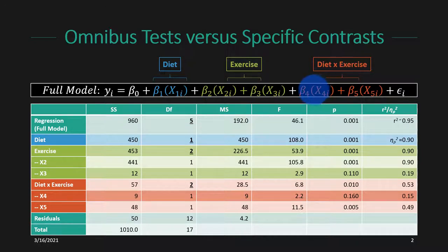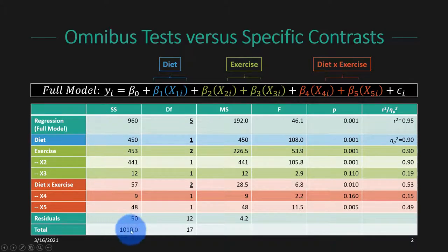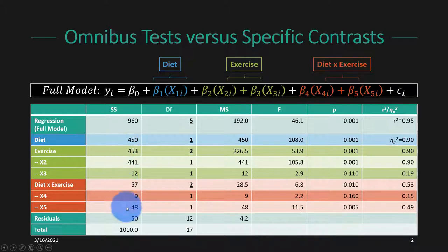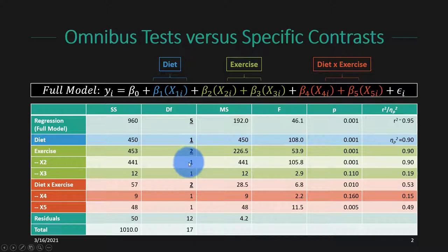If that feels unfamiliar, you can go back and watch the previous videos. In the previous video we calculated the full analysis of variance table, walking through the sum of squared errors explained by each effect. The omnibus effects are denoted with bolded and underlined degrees of freedom, and the individual contrasts that make up those effects are shown below.